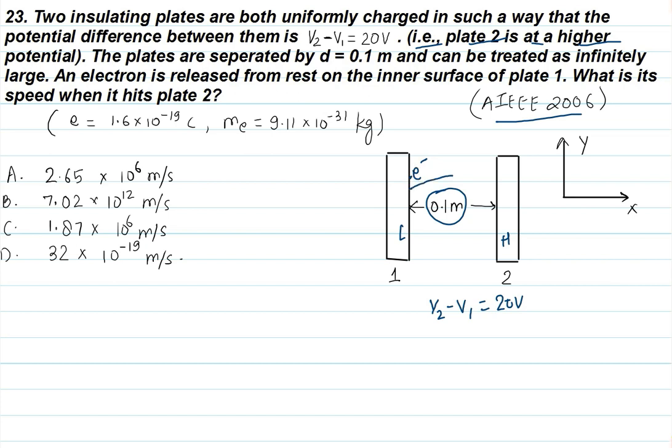The electron has negative charge and will move from lower potential to higher potential. Positive charges move from higher to lower potential. Negative charges always move from lower potential point to higher potential point.